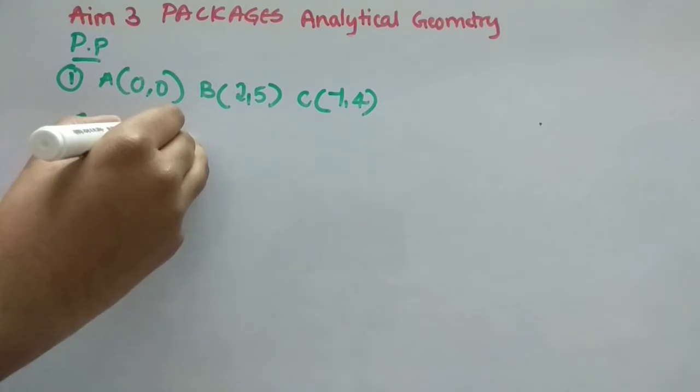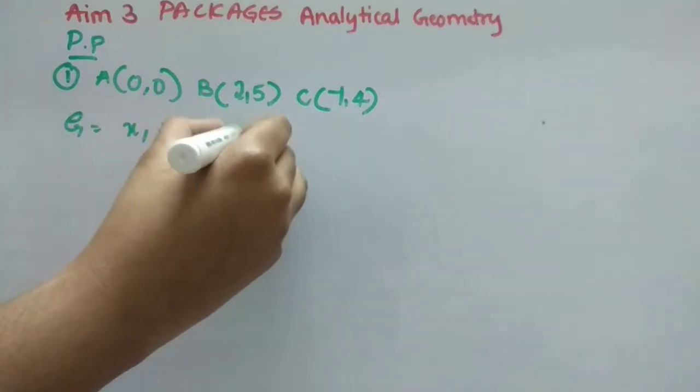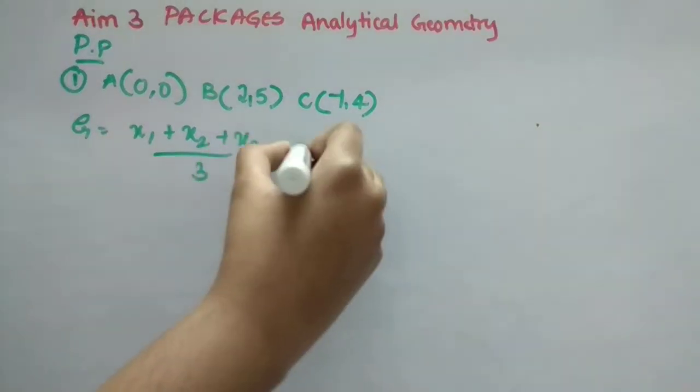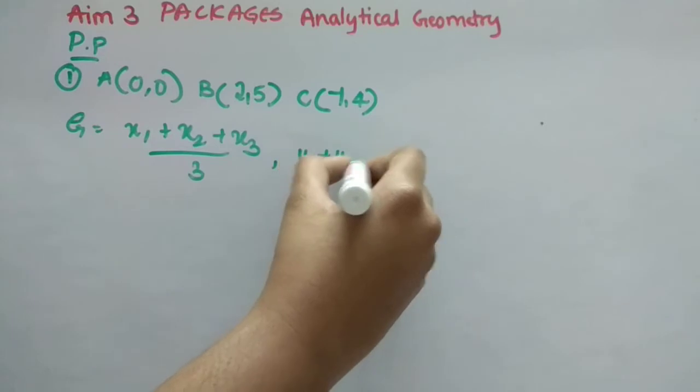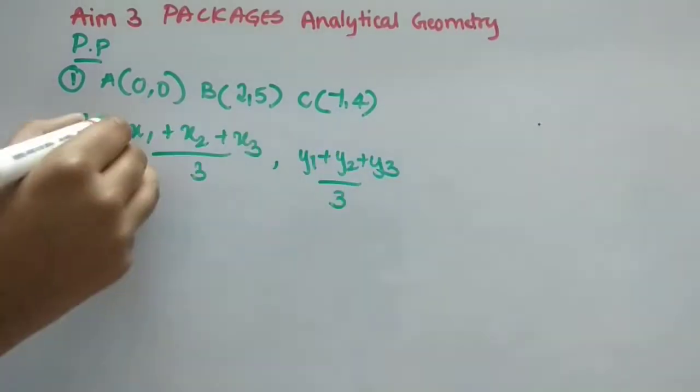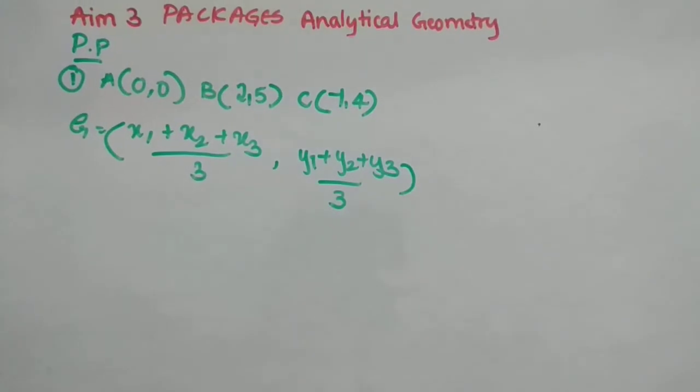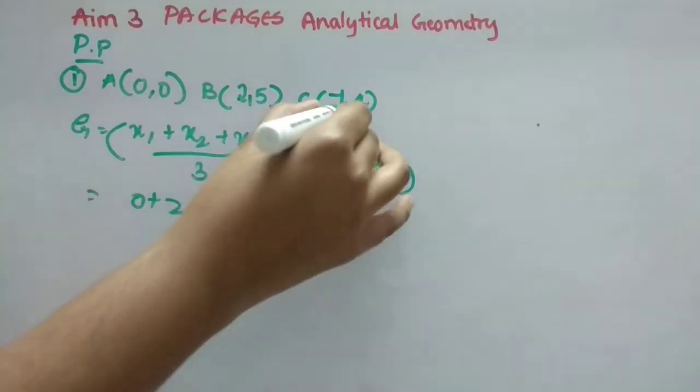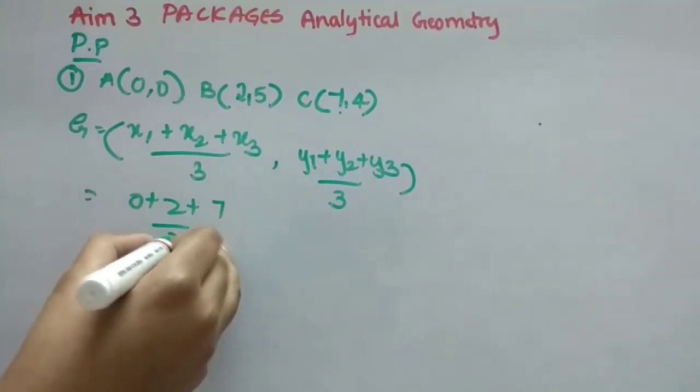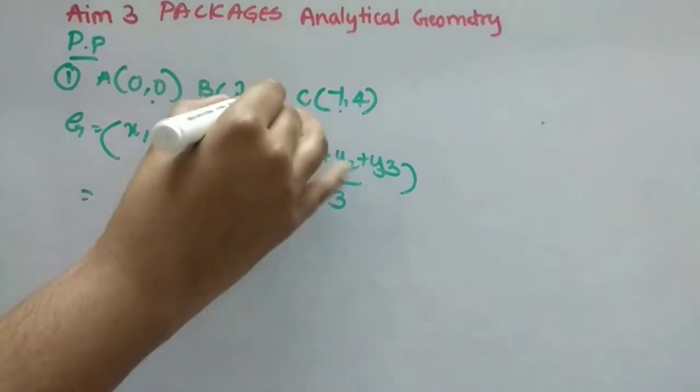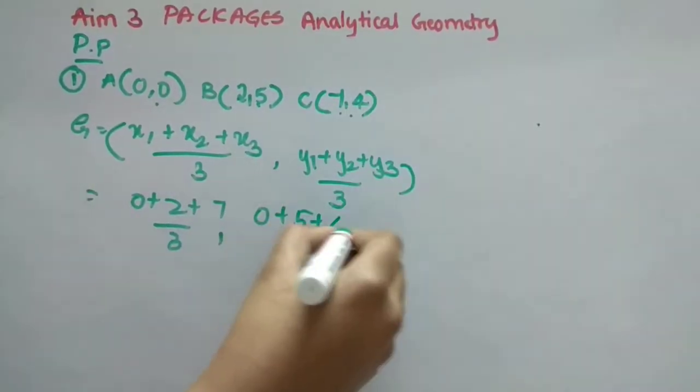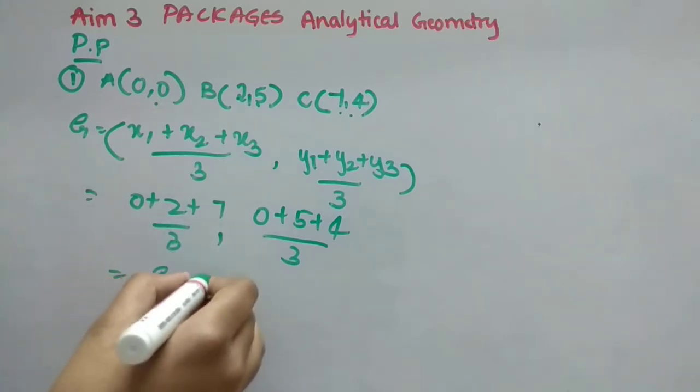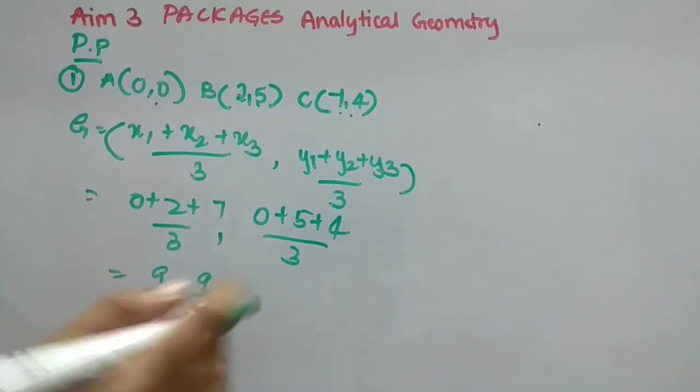What is the formula? Just in the challenges we discussed, right? Last question. X1 plus X2 plus X3 by 3, Y1 plus Y2 plus Y3 by 3, brackets. So X1 value is 0, X2 value is 2 and X3 value is 7 by 3, Y1 is 0, Y2 is 5 and Y3 is 4 by 3.